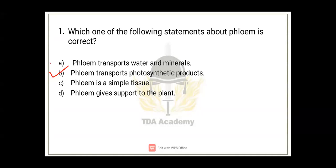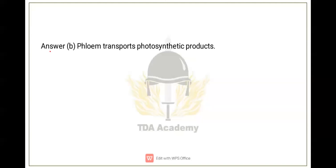Next, phloem is a simple tissue—no, this is your complex tissue. Phloem supports the plant—this support is actually provided by xylem. So the correct answer is option B. Question number one, option B.